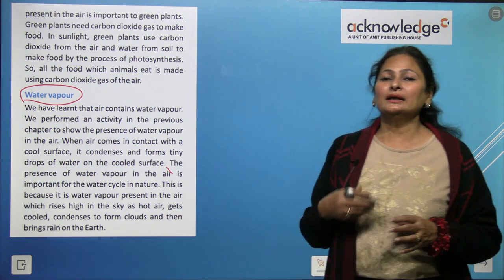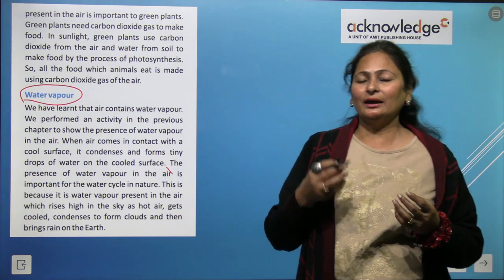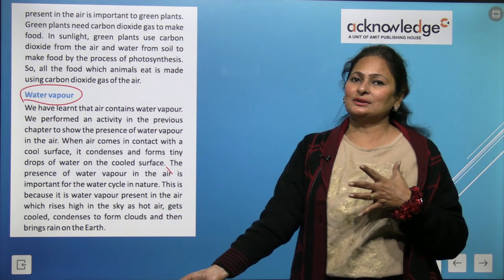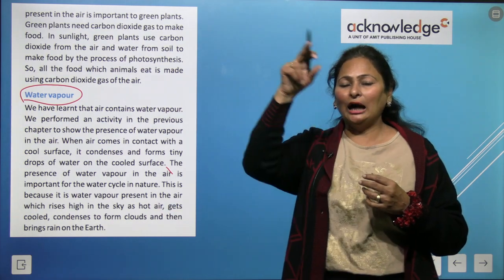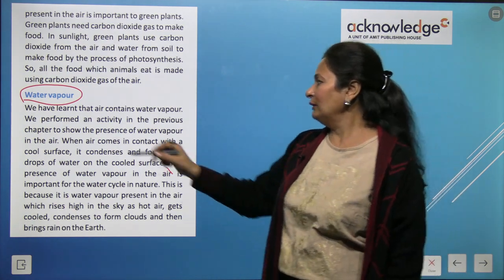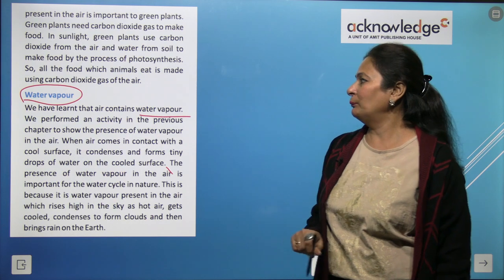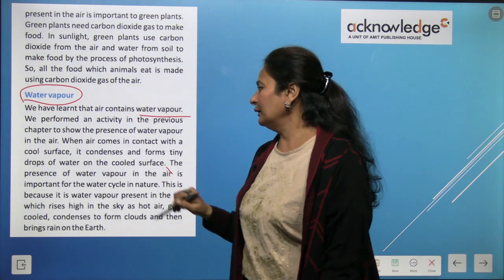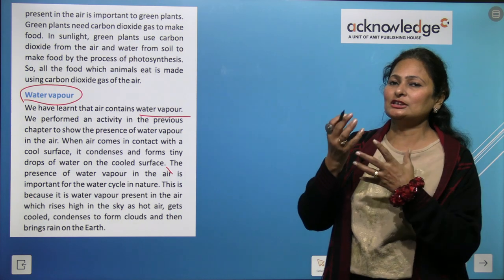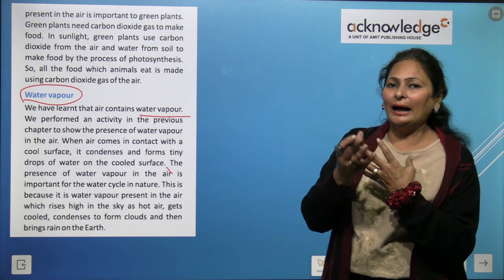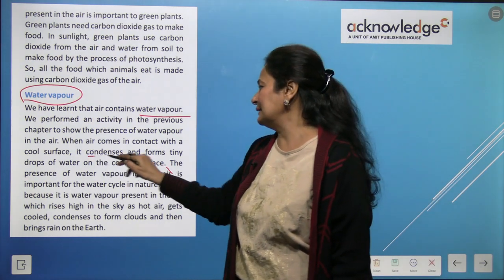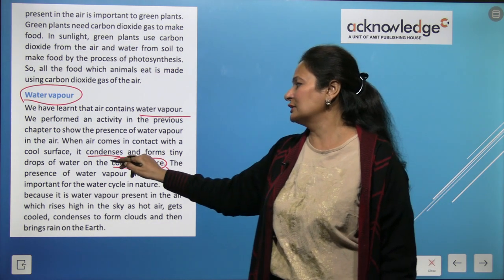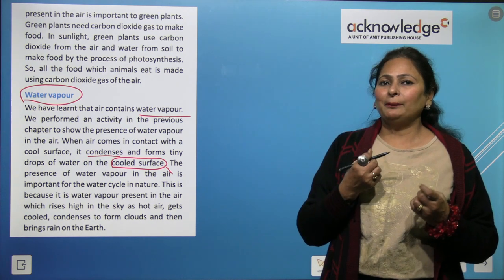The next component is water vapor. In the water cycle, we have evaporation, then condensation, then precipitation — this is how the water cycle occurs in nature. Air contains water vapor. When air comes in contact with a cool surface, it gets cooled and changes into water droplets — this is condensation.